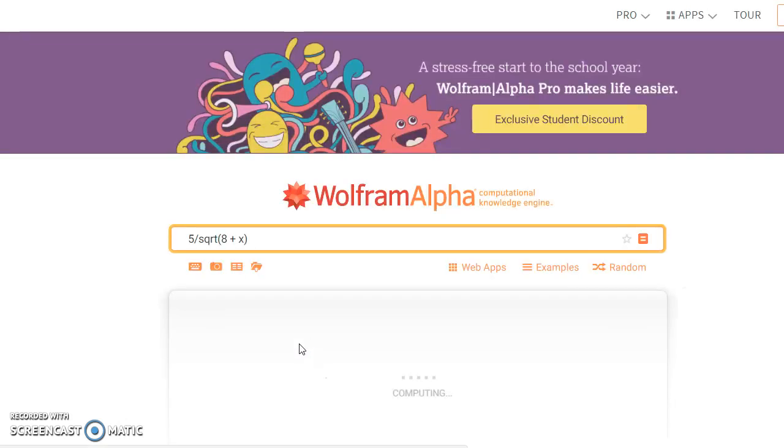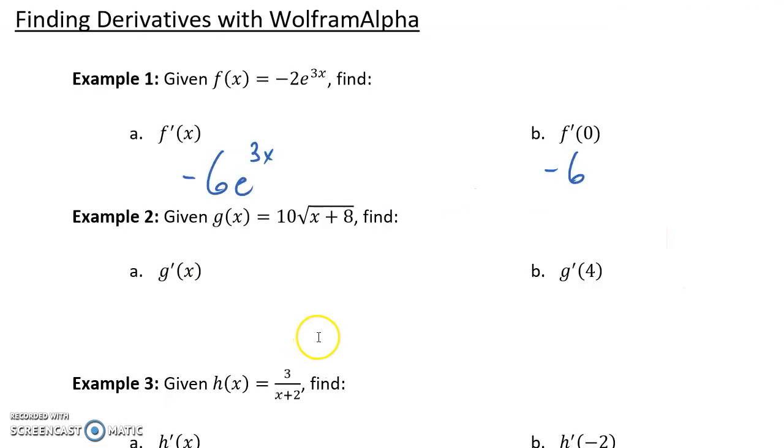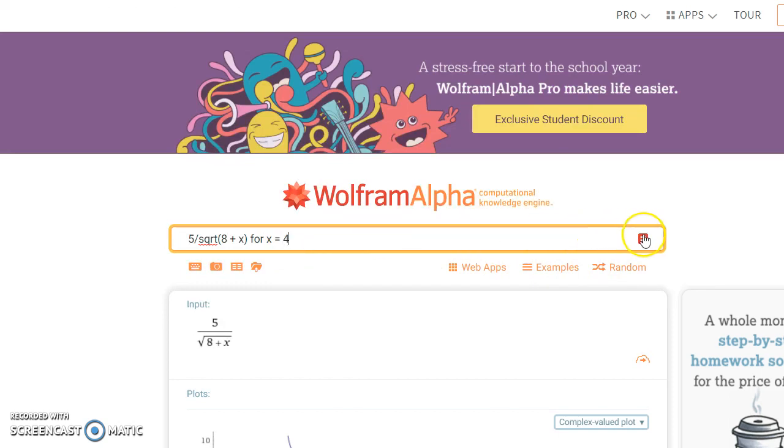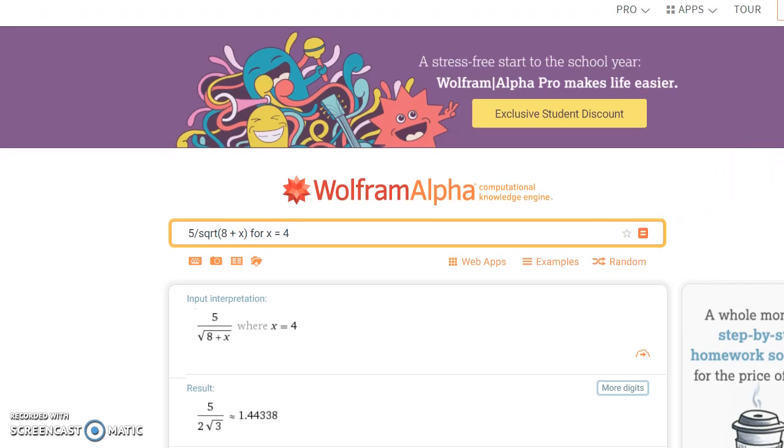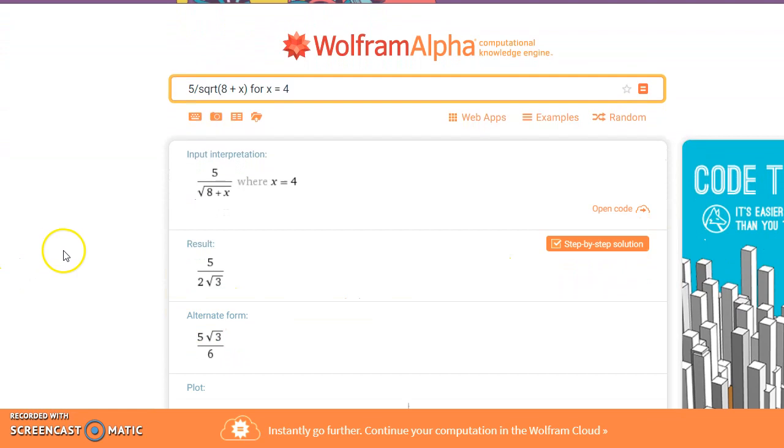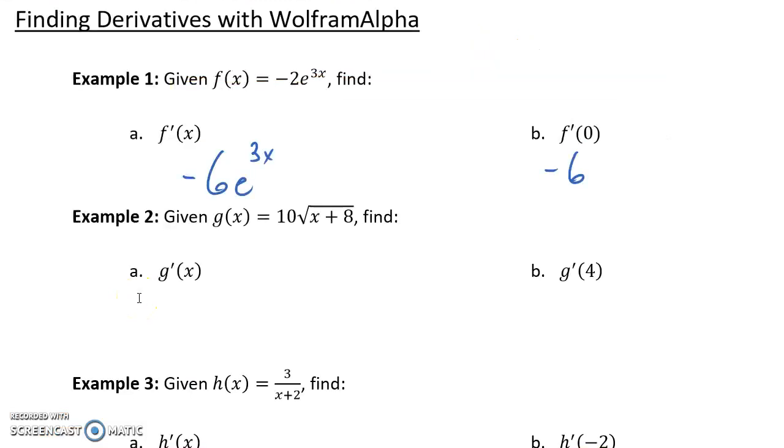If we click on that output, then we want to, in this case, evaluate this function, this derivative function, at x equals 4. And we get our result in a few different forms. 5 over 2 times root 3. Or if we wanted to rationalize that denominator, have a version where there's no radical in the denominator, that would be 5 times root 3 over 6.